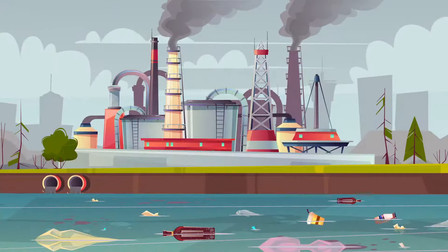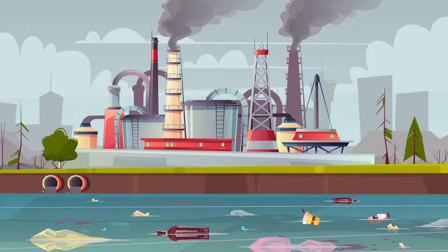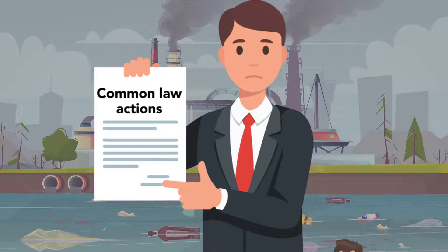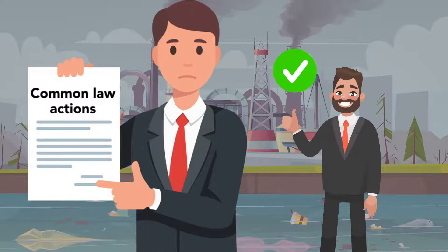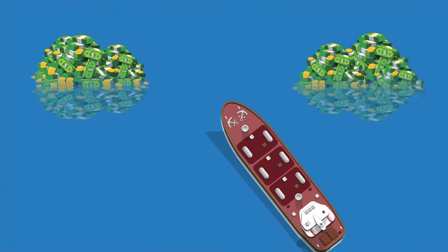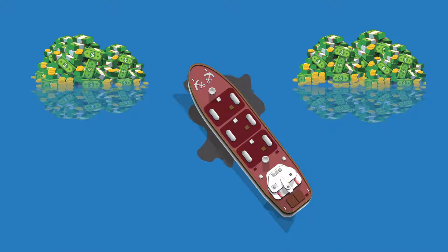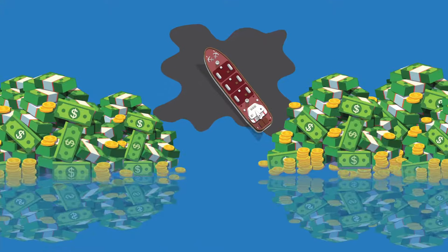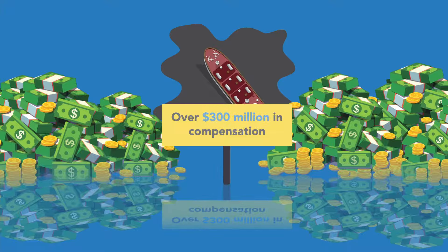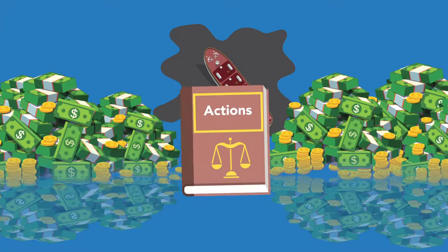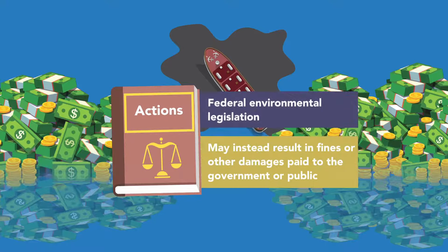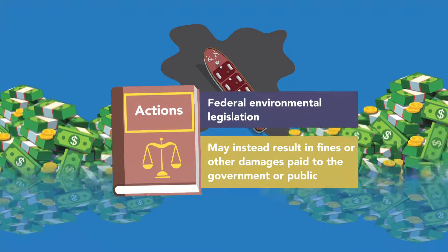When environmental releases damage specific localized communities, common law actions are often the best way that private plaintiffs can be made whole. This is one reason why, for example, the largest awards for damages in the infamous Exxon Valdez oil spill went to plaintiffs in common law claims. Altogether, private plaintiffs in common law actions were awarded over $300 million in compensation. Actions brought under federal environmental legislation, on the other hand, may instead result in fines or other damages paid to the government or public.